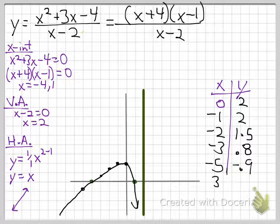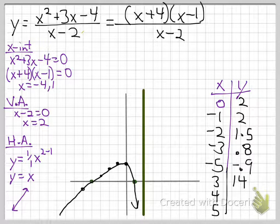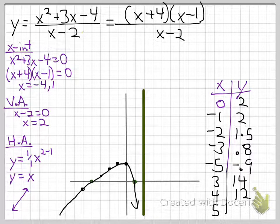Now we check the right side of the asymptote. Plugging in x equals 3 gives (7)(2) over 1, which is 14. Plugging in x equals 4 gives (8)(3) over 2, which is 12. Plugging in x equals 5 gives (9)(4) over 3, which is also 12.